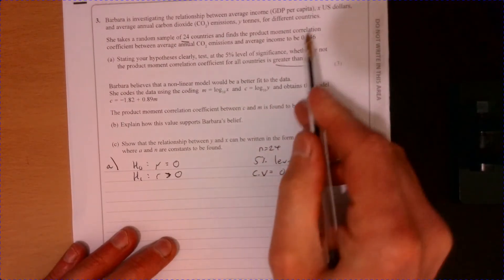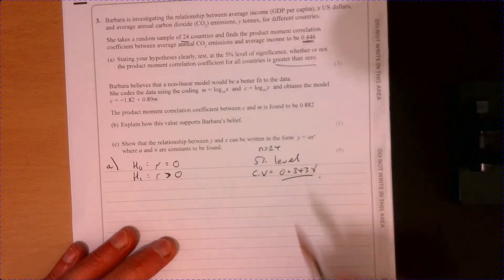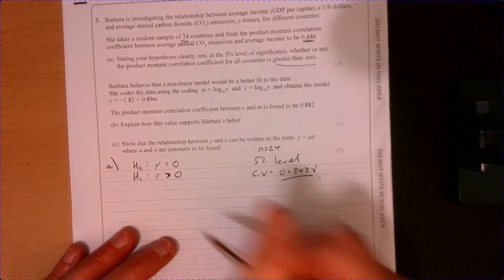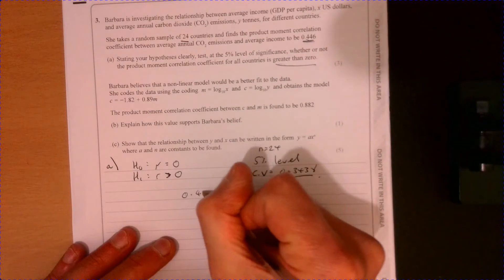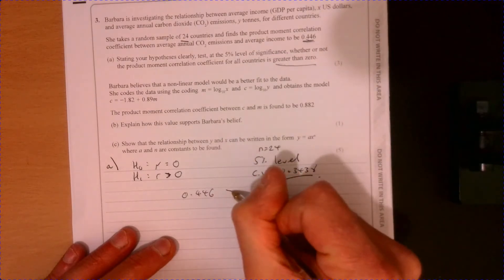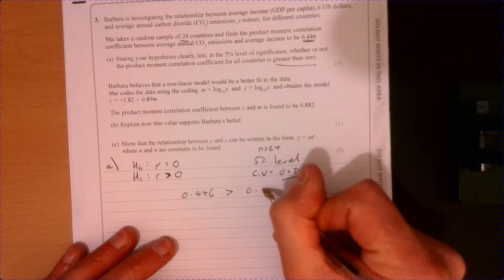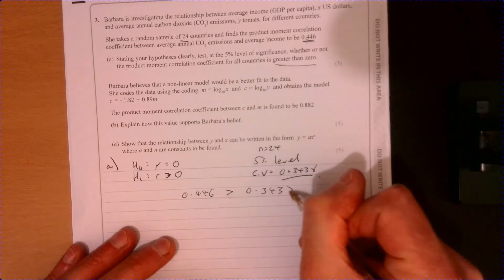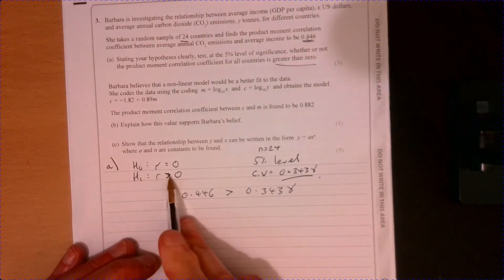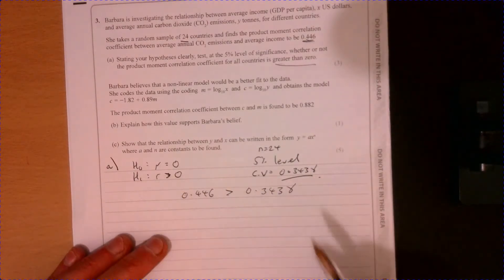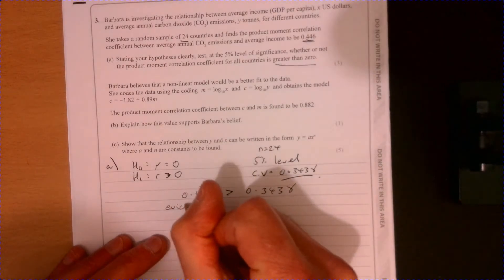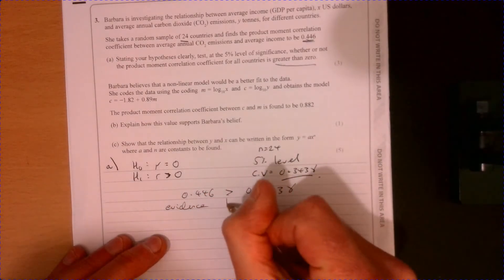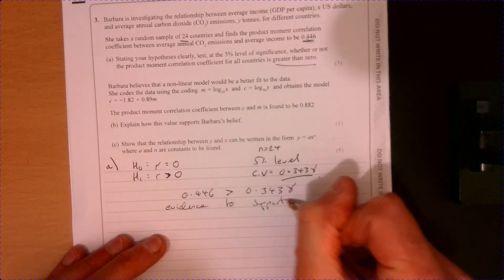Our observed value that was calculated for us is 0.446. So 0.446 is more than our critical value. So that's suggesting this. So we need to write something like there is evidence to support.